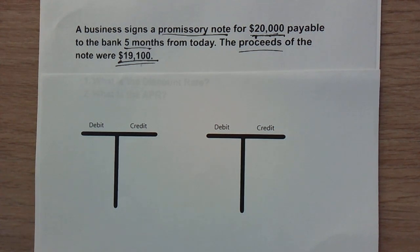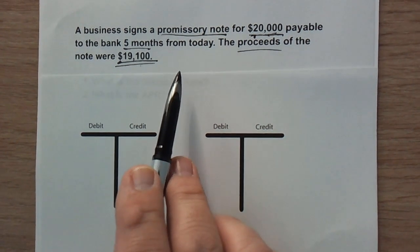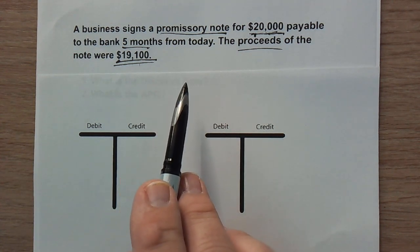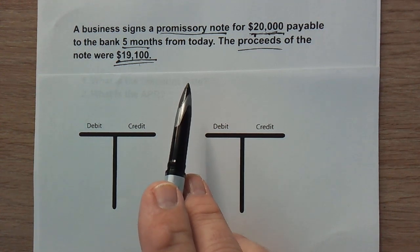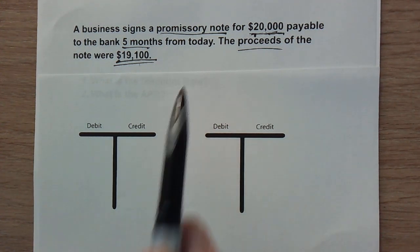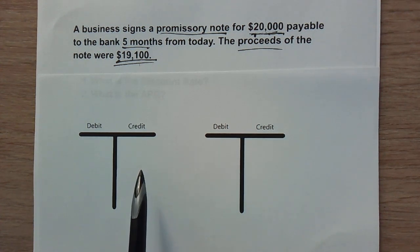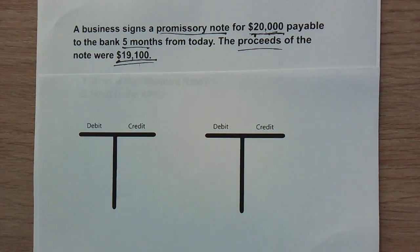Let's go ahead and journalize these entries, including the signing of the promissory note. We'll show how the payments would be made if they are accrued monthly — those would be adjusting entries — and then finally when the note is paid off at the end of five months. I'm going to show how to journalize all of those.